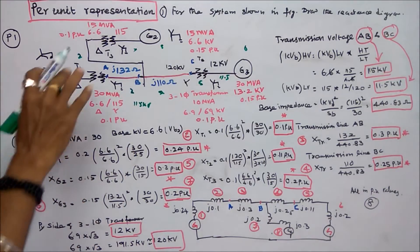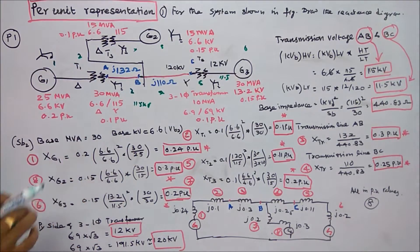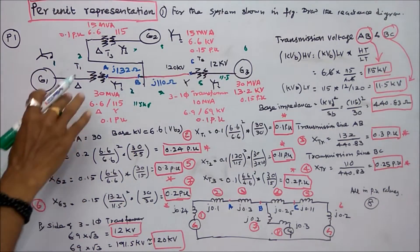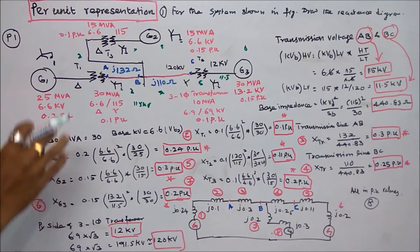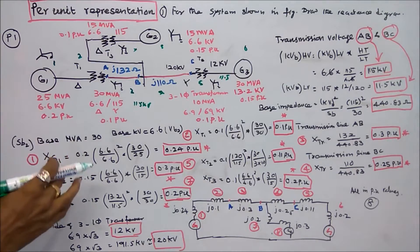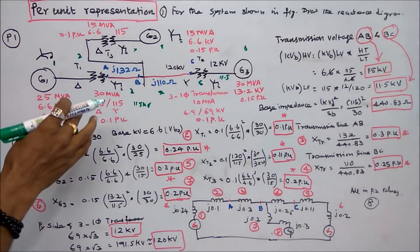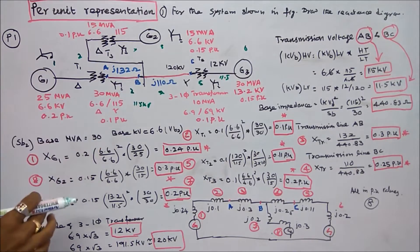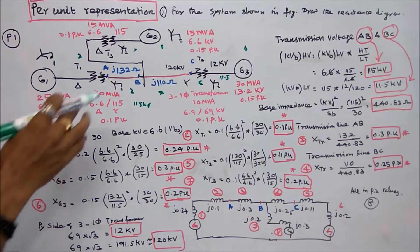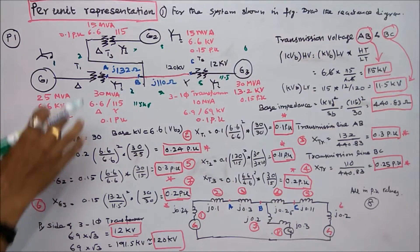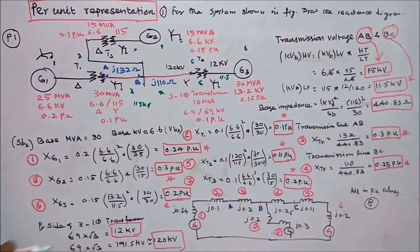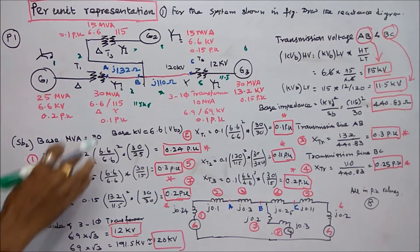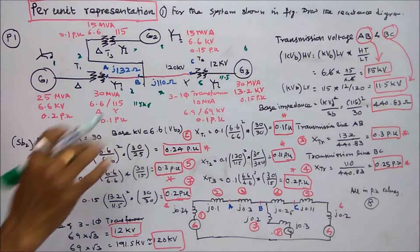The second component is a transformer. Rating is 30 MVA, 6.6/115 kV. This side is delta connected and this side is star connected. Reactance is 0.1 per unit.